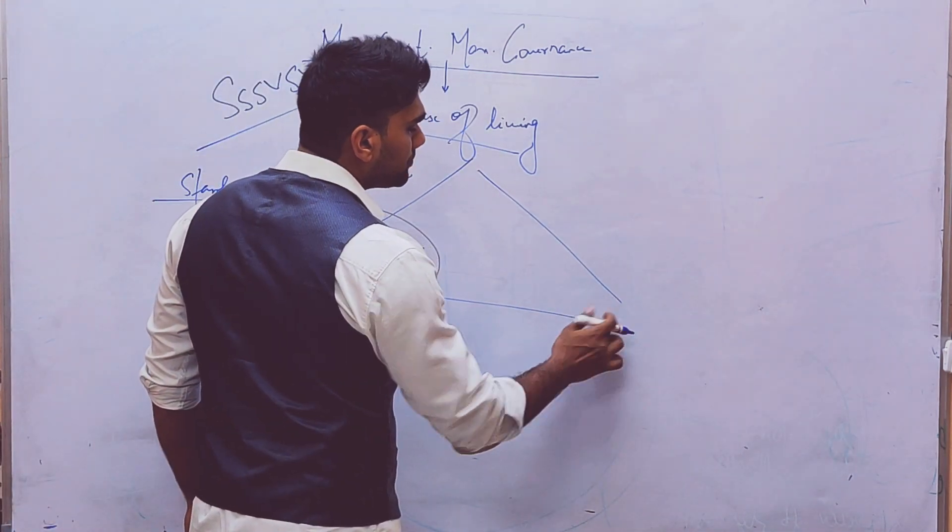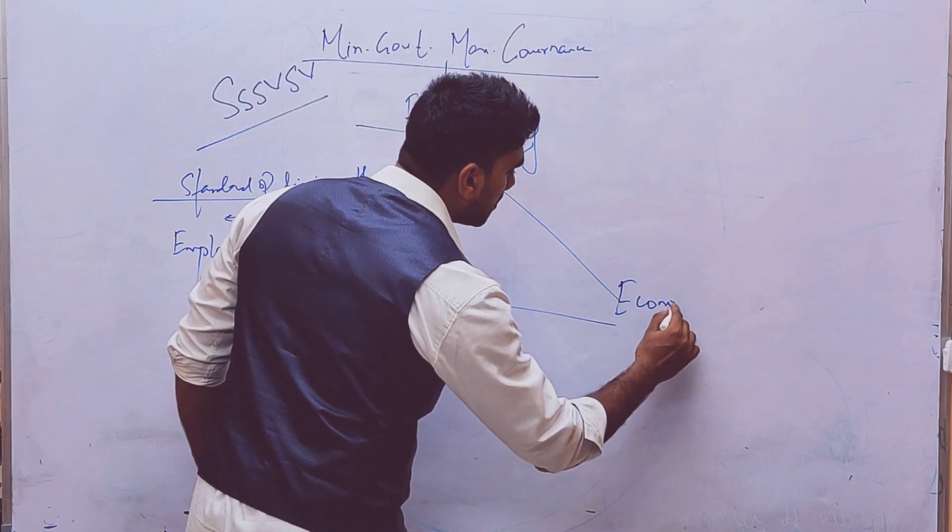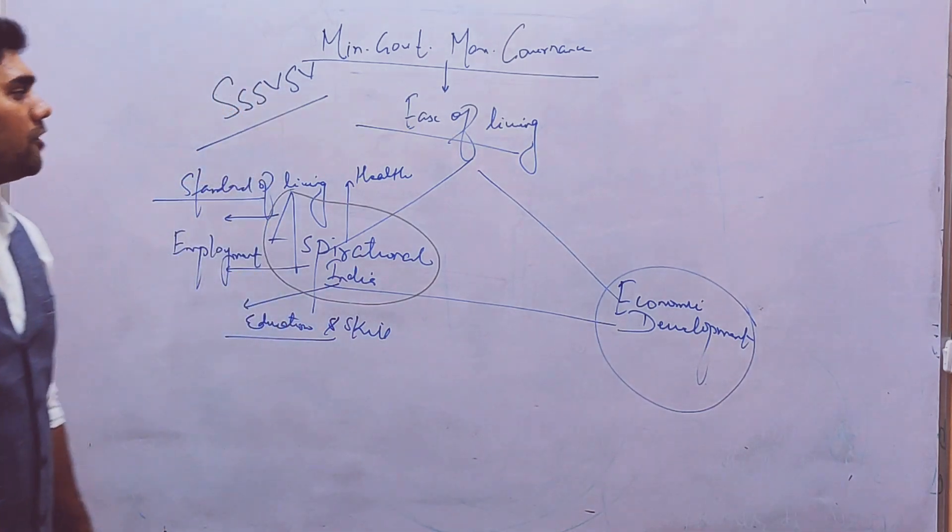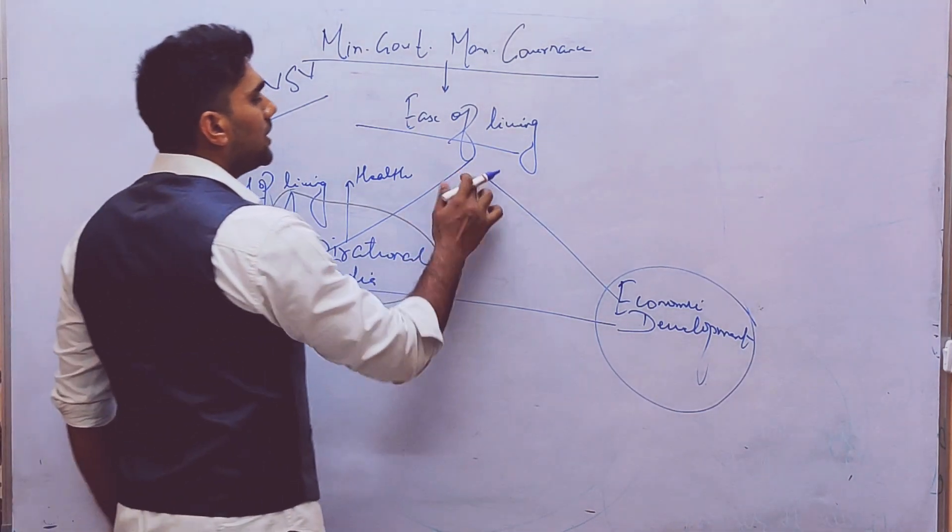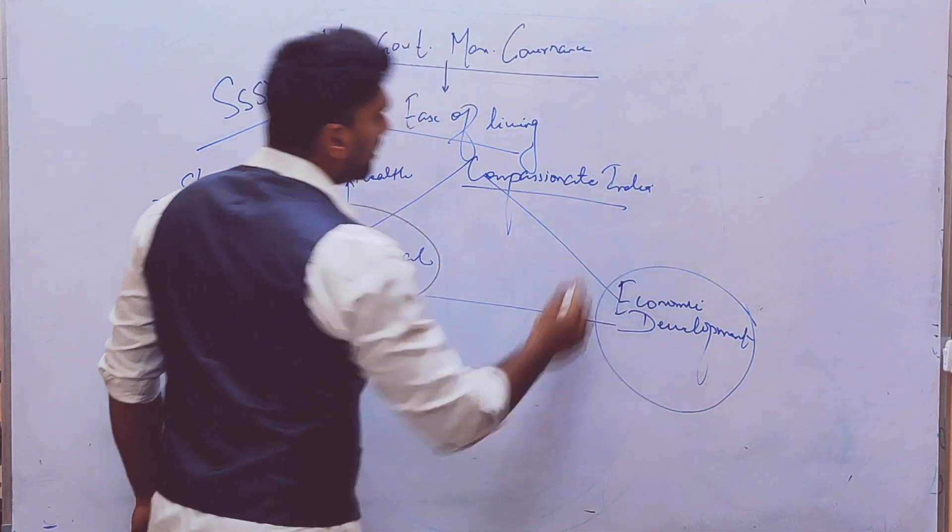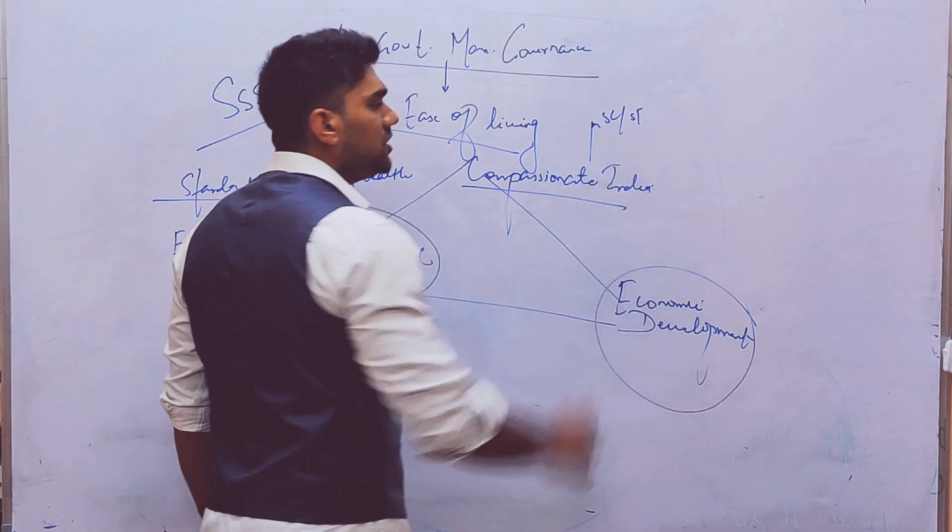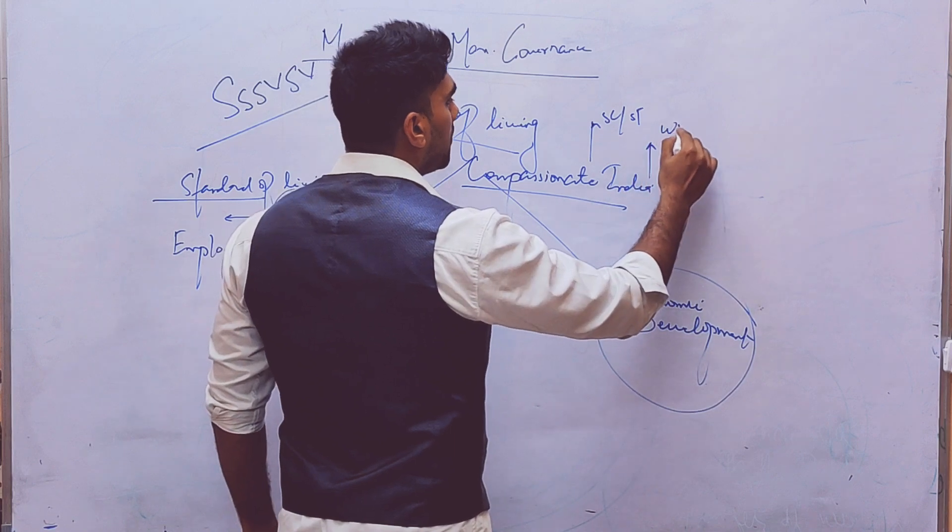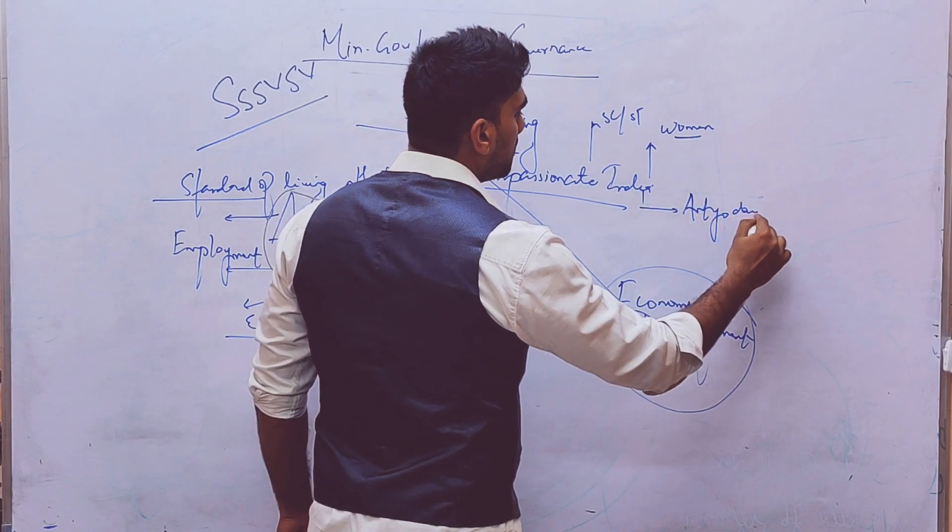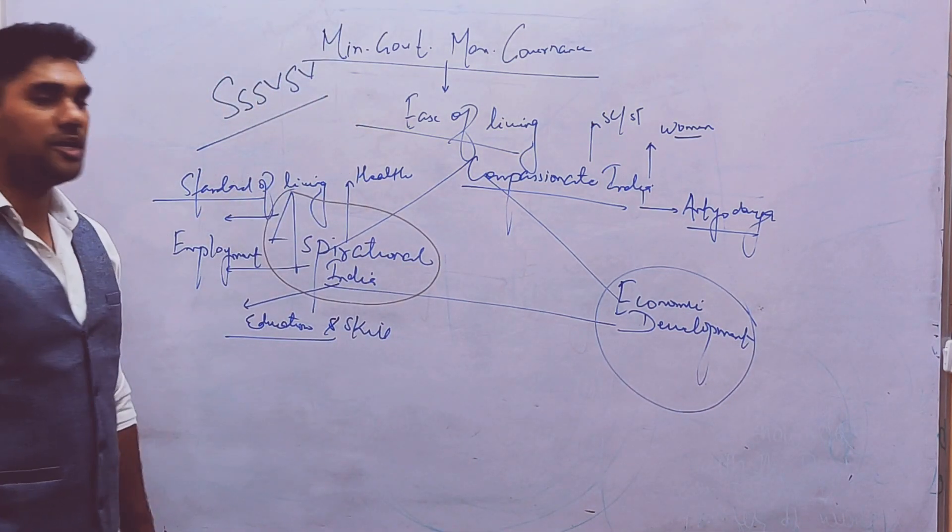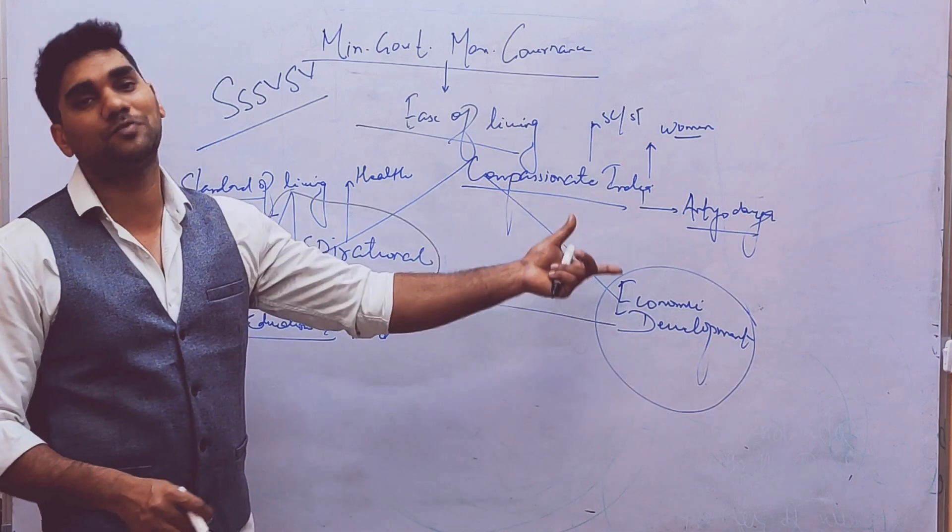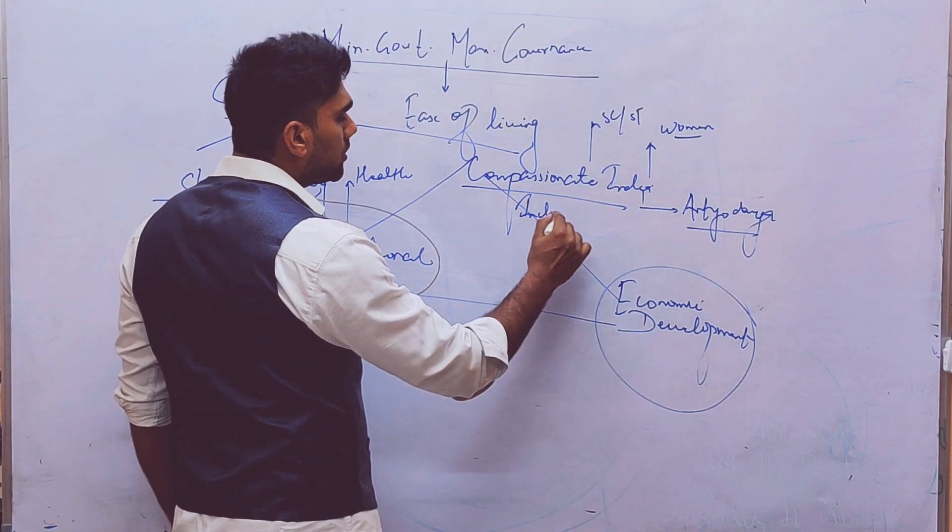Second pillar of ease of living is economic development. This is the second pillar of ease of living and the third pillar is compassionate India, which is going to be compassionate towards SC/ST, which is going to be compassionate towards women, which is going to be following the policy of Antyodaya. Compassionate India is going to be empathetic towards the needs of these sections of the society. That means compassionate India will talk about inclusive growth.